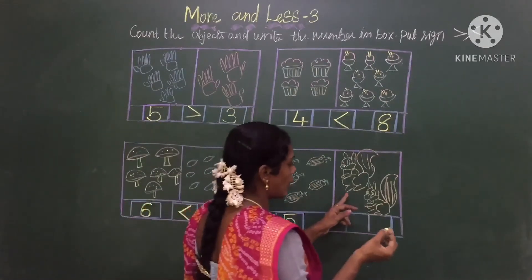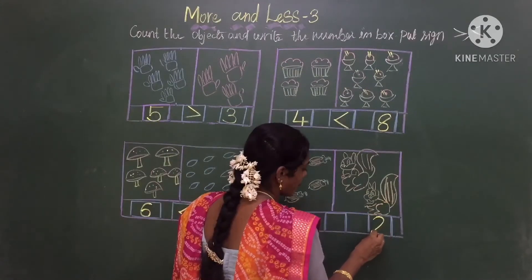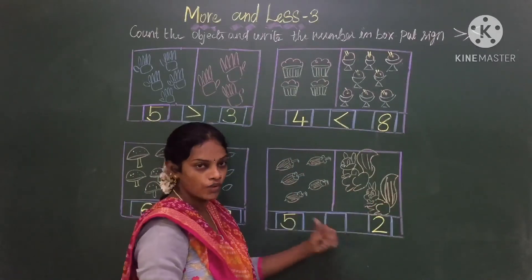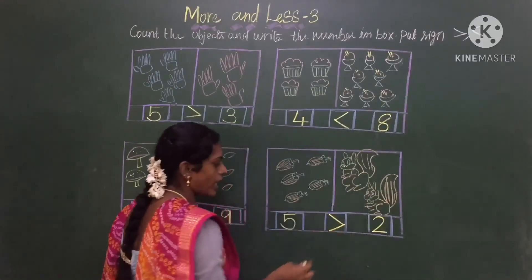Now we will count this queen: 1, 2. So we will write. Now in this which object is more, 5 or 2? 5. So what we have to do? We have to put this sign.